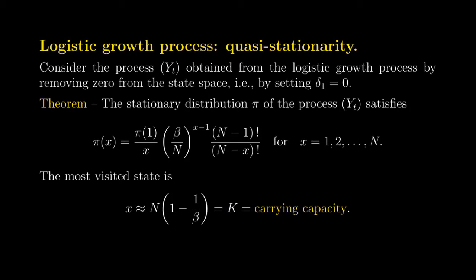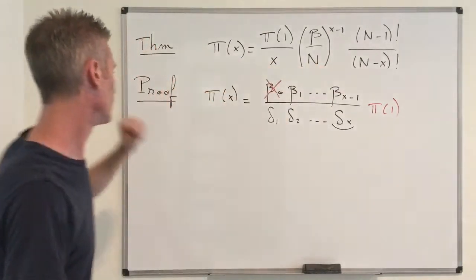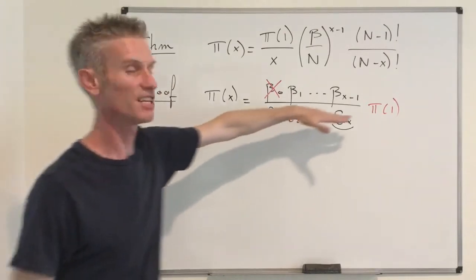So now to conclude this video, we are going to deduce from this result the fact that the states that are most visited under the process Y_t are the states that are close to the carrying capacity. I remind you from the previous video that the carrying capacity for the logistic growth process is exactly N times (1 - 1/beta). This result will tell you that the logistic growth process has a behavior similar to the logistic equation, in the sense that the states most visited under the quasi-stationary distribution are close to the fixed point of the logistic equation.